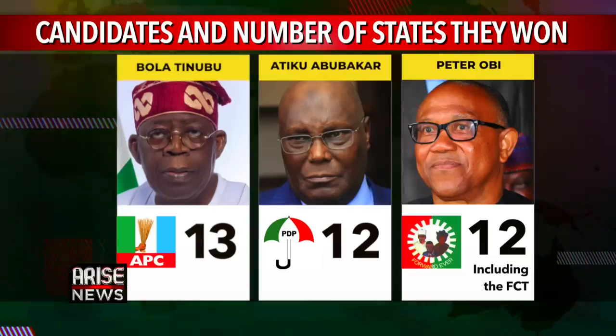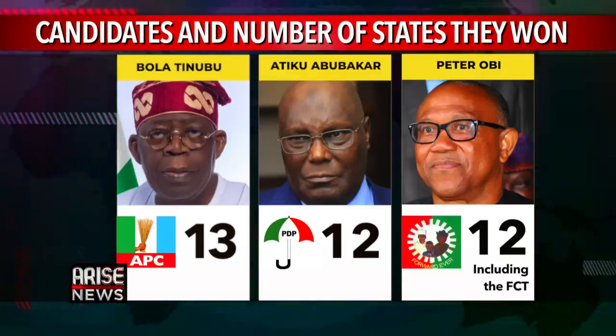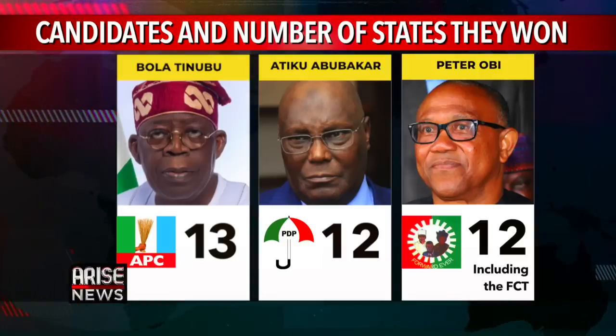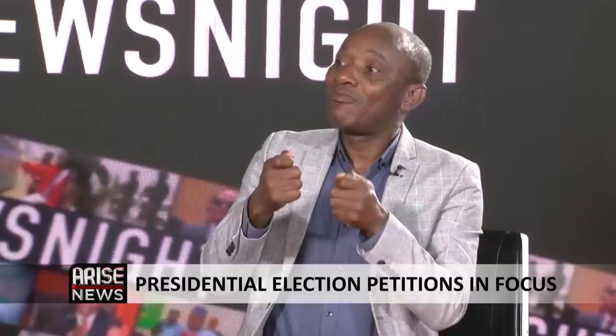All this is presupposing that the tribunal takes a view that the election is invalid, inconclusive, or whatever it is. If they don't take that view, we're not going to get to that point. We've not had a situation in our country where the election has been upset on the ground that the person declared was not validly declared. All three briefs — Labour Party, APC, APM — seem to invite the tribunal to either invalidate the election, say the elections were terribly flawed, order a rerun, disqualify somebody, or declare that somebody was not validly elected, in which case it might get into a runoff.